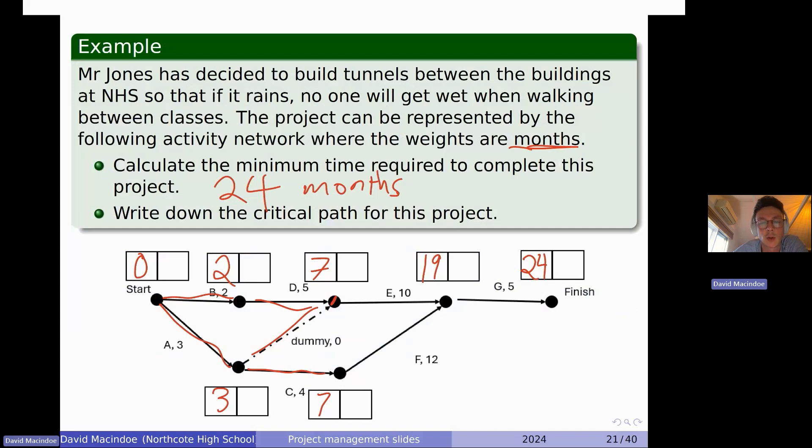Now we need to do the critical path. So we've already got all the ESTs. We do the LSTs and then see where there's no float time, so where these two boxes give the same number. So the first thing we have to do to get the LSTs is in this last box, we just put whatever is in the other box there, the EST for it. So it's 24. And we work backwards.